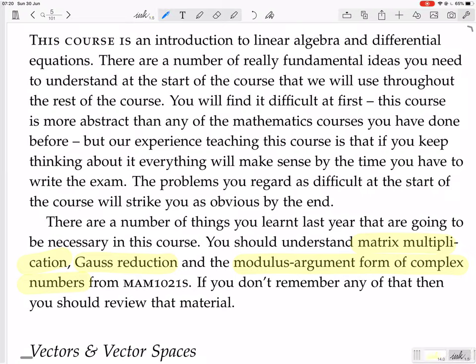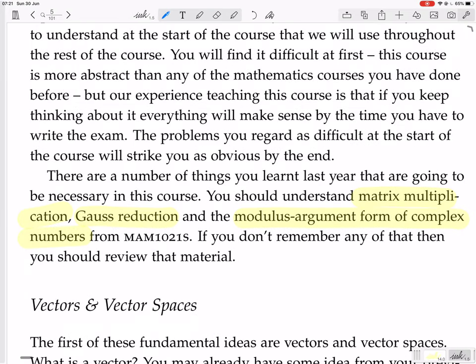And then the modulus argument form of complex numbers, that's when you write a complex number. A complex number is something like A plus BI, where A and B are real numbers, so it's got a real part and an imaginary part. But you can also write it in the form of the modulus R, then E to the I theta, where the argument is theta. So you need to know how to convert something in this form into something in that form, and vice versa.